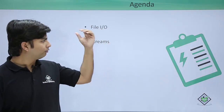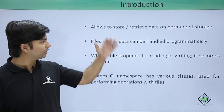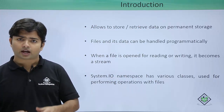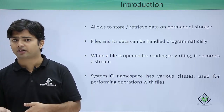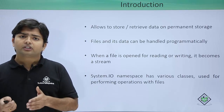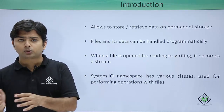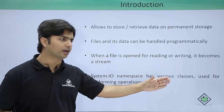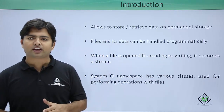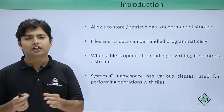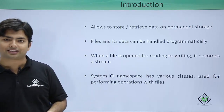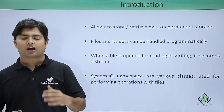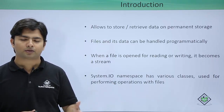Whenever we want to store data permanently we can use files. Files provide data storage, and you can also retrieve the data either in plain text format or in binary. Whenever a read or write operation is done to a particular file, we call it a stream — when a file is opened for reading or writing, it becomes a stream. We will use the System.IO namespace, which gives us a number of classes using which you can access your directory, your files, your drives, or whatever you want to implement.